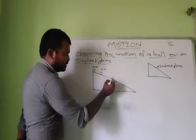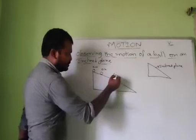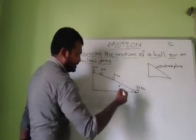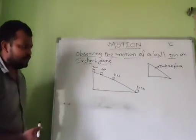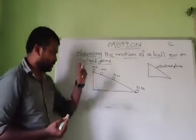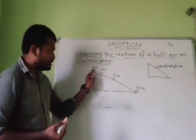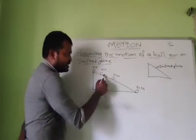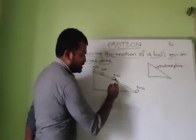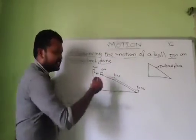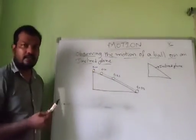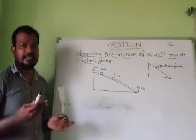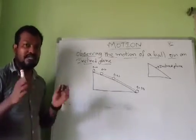It reaches to the other point, maybe at time equal to 2 seconds. It reaches to the bottom at time equal to 3 seconds. The time taken by the body is 1 second, but it has travelled a lesser distance. For another second, it has travelled more distance. For another second, it has travelled more distance than earlier. Once the ball is getting down, its speed is increasing. Because of that, it is covering more distance.